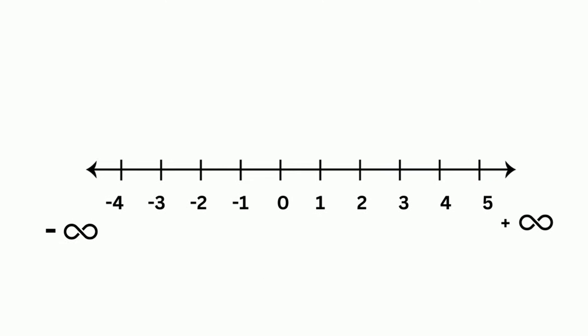Next, we have x is less than or equal to 2. Okay, here's negative infinity, positive infinity. The 2 is closed because it includes the 2 because it's less than or equal to. Arrow going to the left for infinity.